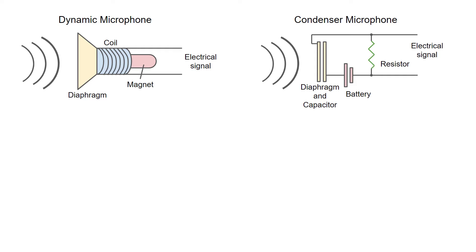In a dynamic microphone, the moving air strikes a diaphragm, which moves a coil of wires over a permanent magnet to generate an electrical current. This is the opposite of how a speaker works.